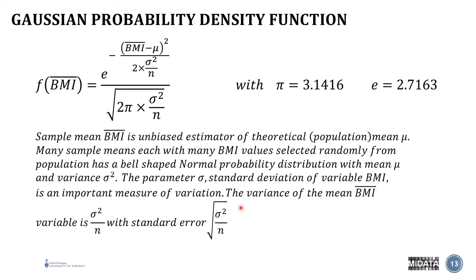Now the variance of the mean BMI, so the mean of the sample, is sigma squared over n and if you take the square root of this it's called the standard error and this is an important measure for us in statistics.